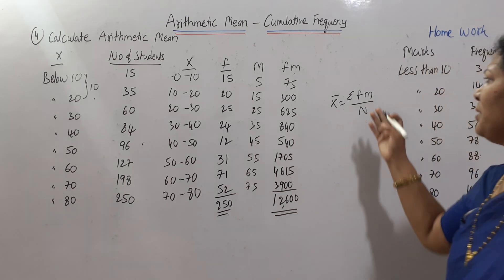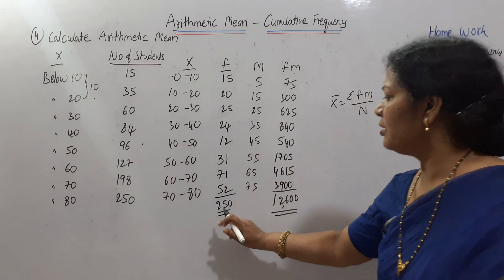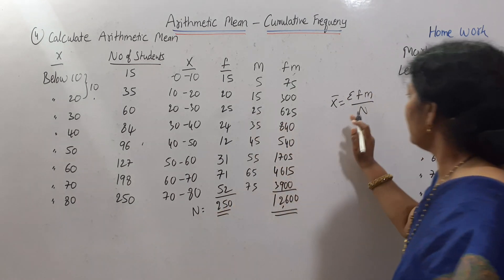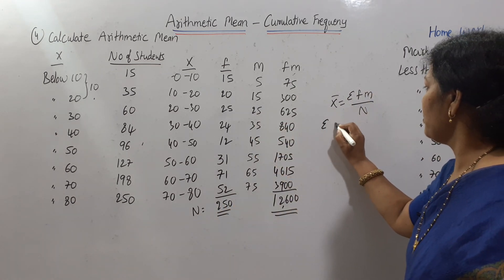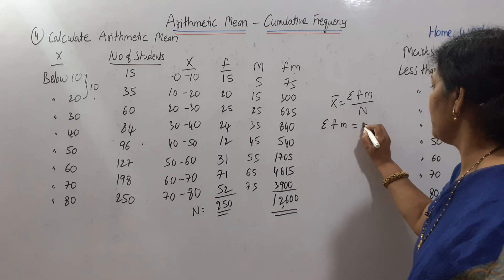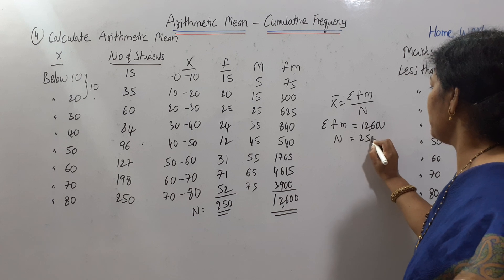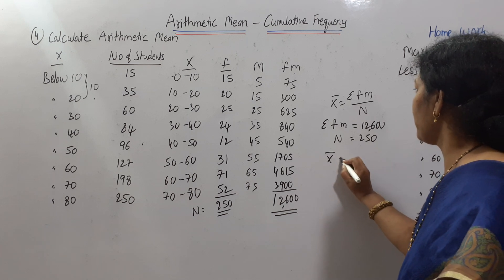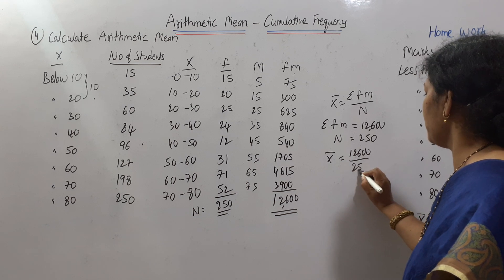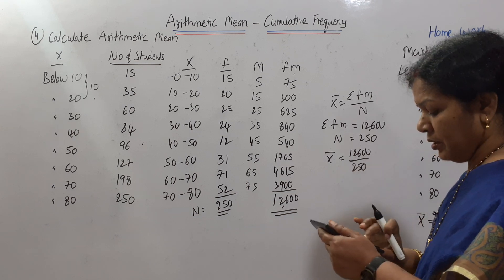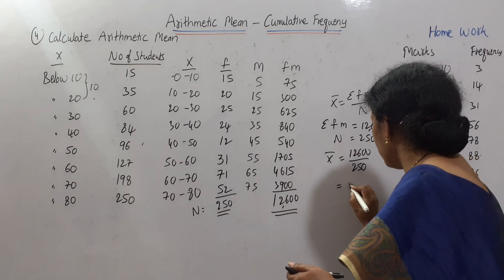Now applying the formula: σfm = 12,600 and n = 250. So x̄ = σfm / n = 12,600 / 250 = 50.4. The arithmetic mean is 50.4. We need to draw the table properly with a scale and pencil.